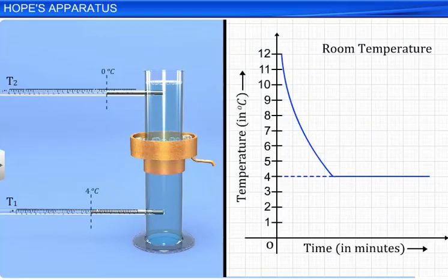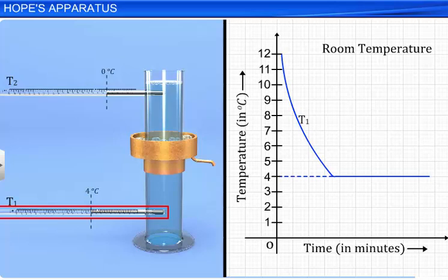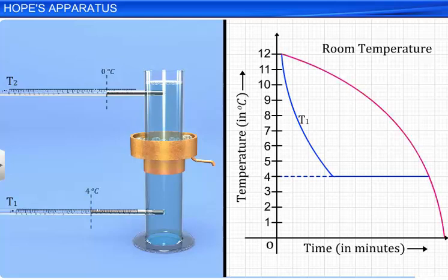If you plot a graph for the variation of the temperature recorded by thermometer T1 with time, it will be as shown here. Similarly, the graph for the temperature recorded by thermometer T2 with time will be as shown.